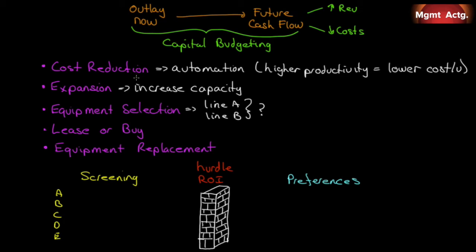Expansion to increase capacity. You can call this effectiveness investing. You get to a certain size. You're successful. Things are going great. You got a lot of customers. Let's build bigger. So you might not worry too much about your efficiency. When you have unserved customers, you're going to invest in more effectiveness. How can I be more effective? I can expand. So expansion to increase your capacity.